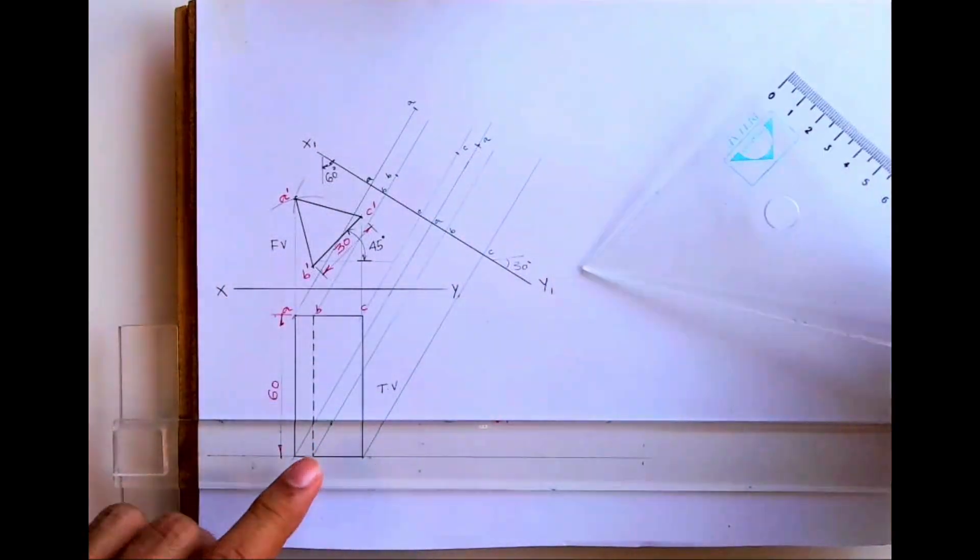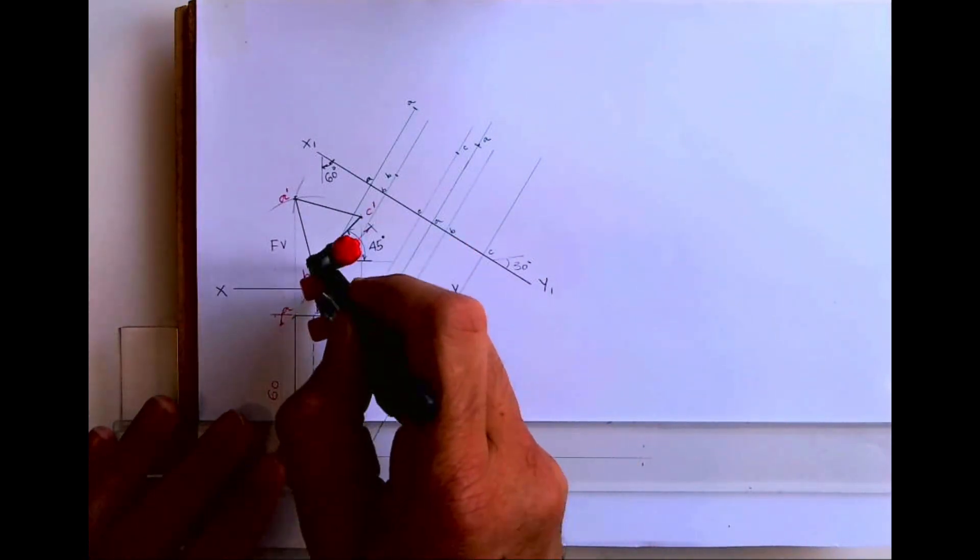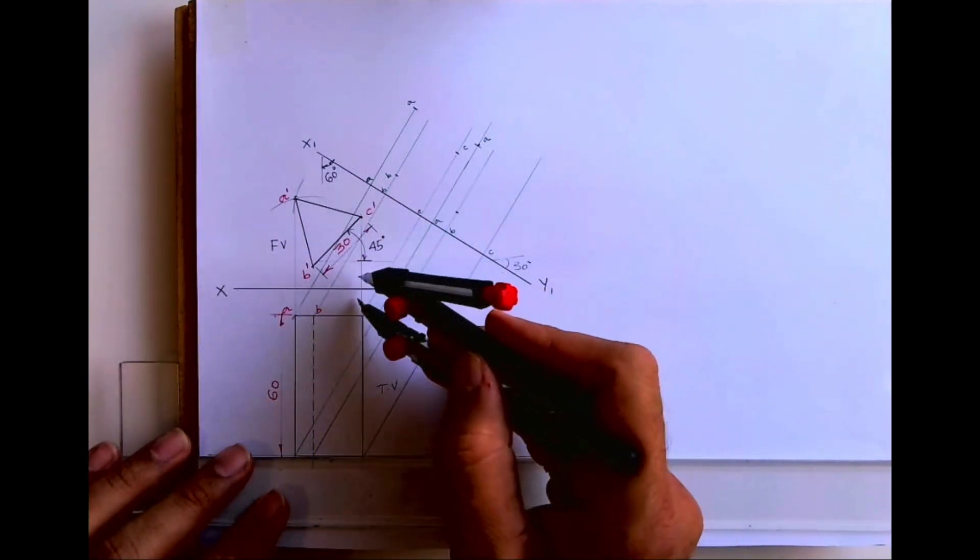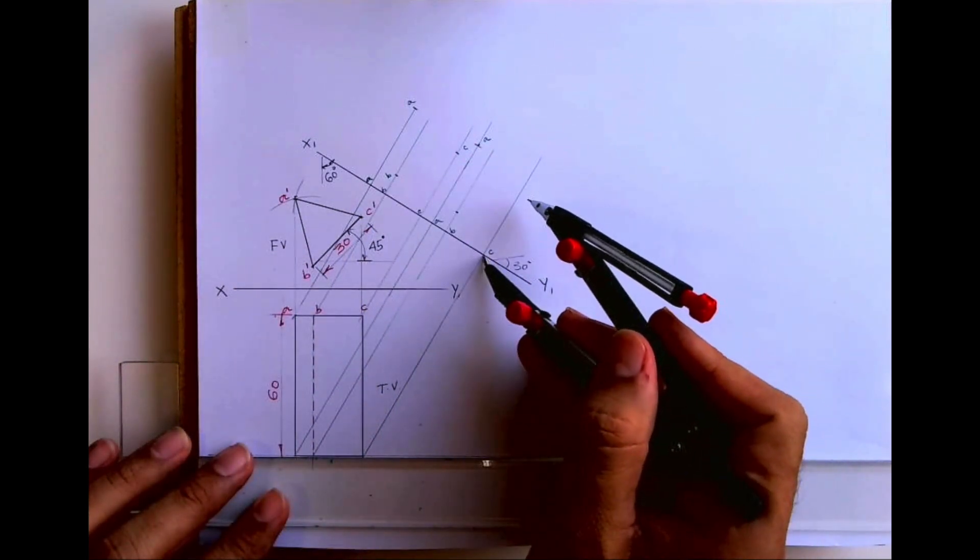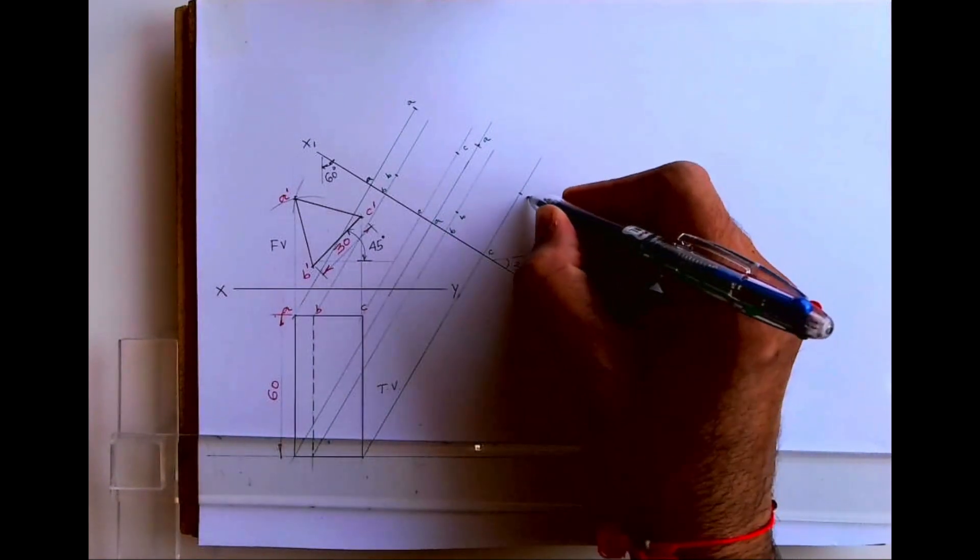This is A. Same way we'll mark B and C. So this is how you will get B and C.